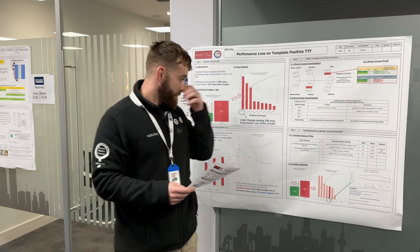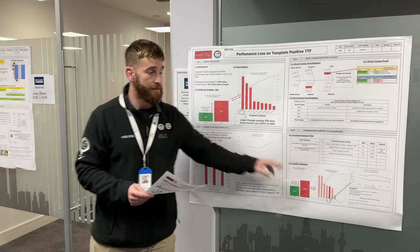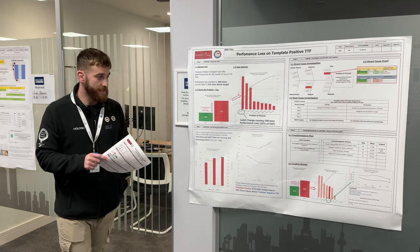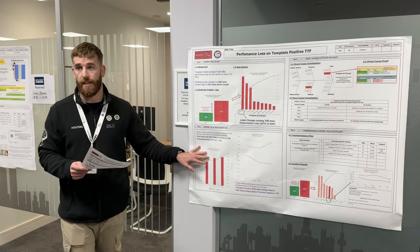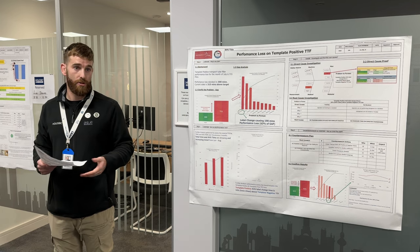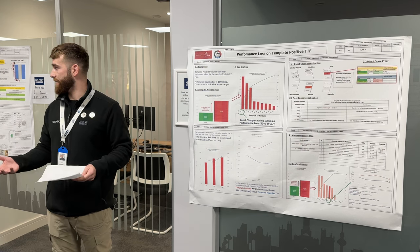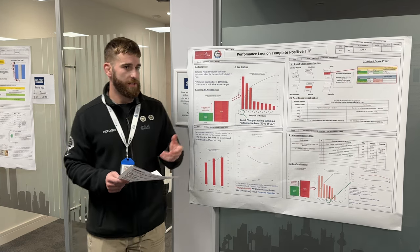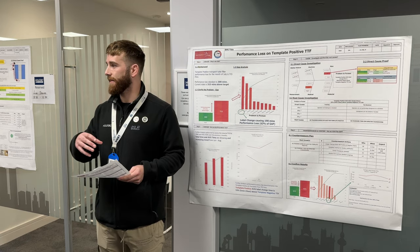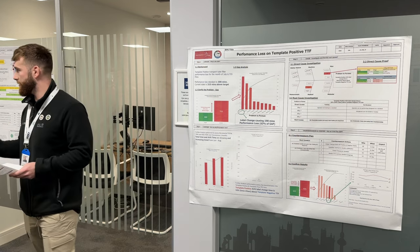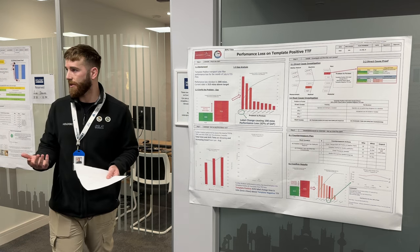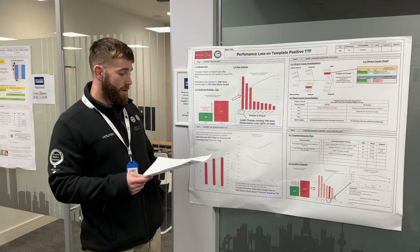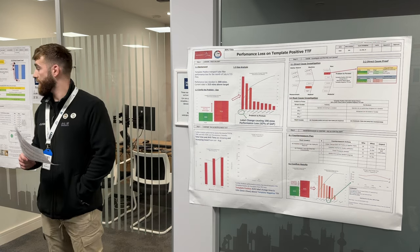I really like the direct cause section, and keeping the gap visible at the end same as the beginning so you can see the impact straight through. What didn't work so well: the containment section - I struggled to apply the who, what, where, when, why, and how much to a downtime problem. I also struggled to get the business impact. I understood labor costs per hour, but I struggled to get the full figure - materials, rejects, downtime - how much is a minute worth in the positive lab? But that's not a problem with the framework, just my experience.